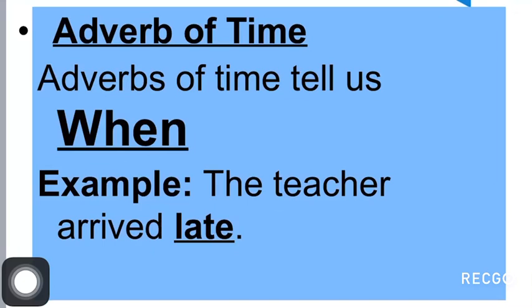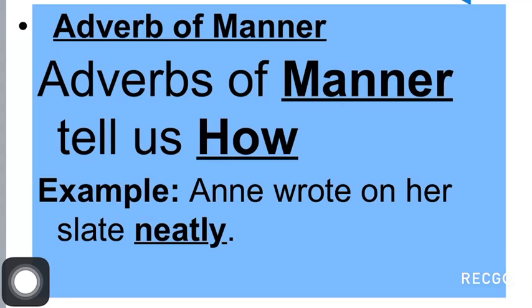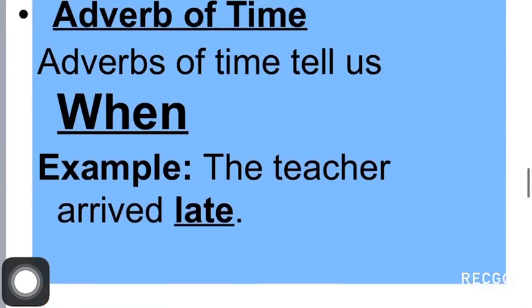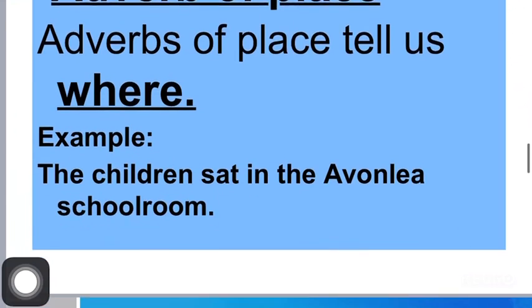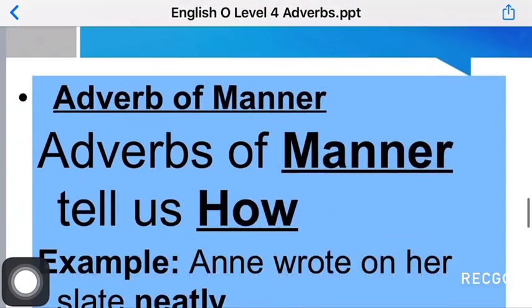Moving to the third type of adverb — adverb of manner — it talks about how. The example is: 'Annie wrote on her slate neatly.' So 'neatly' is a word which is adding additional information about the verb — how that verb took place. So my dear friends, we have covered three types of adverb: adverb of place, adverb of time, and adverb of manner.